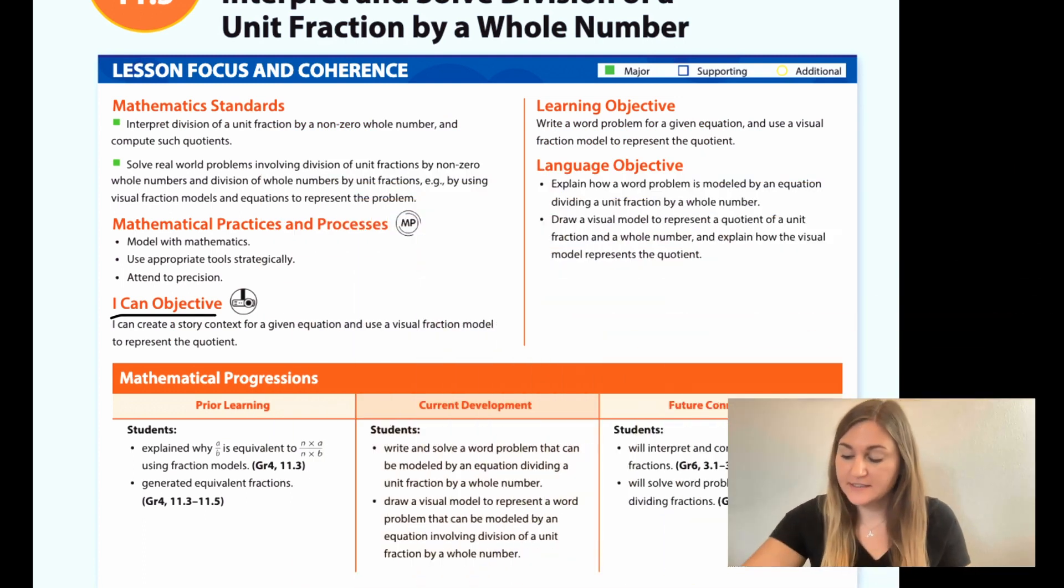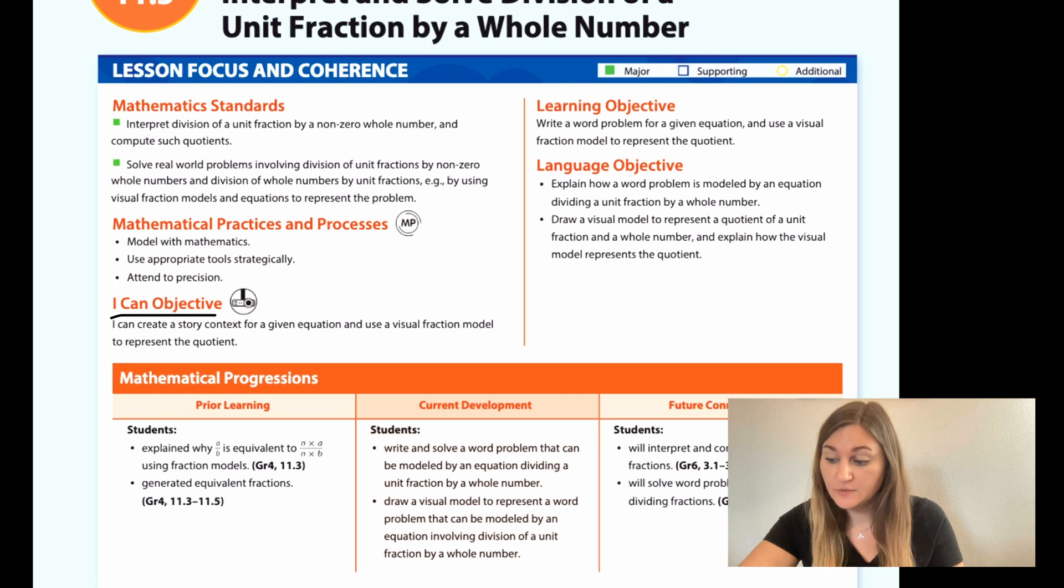Let's start off by going over the I can objective. It says I can create a story context for a given equation and use a visual fraction model to represent the quotient. And the learning objective is to write a word problem for a given equation and use a visual fraction model to represent the quotient.